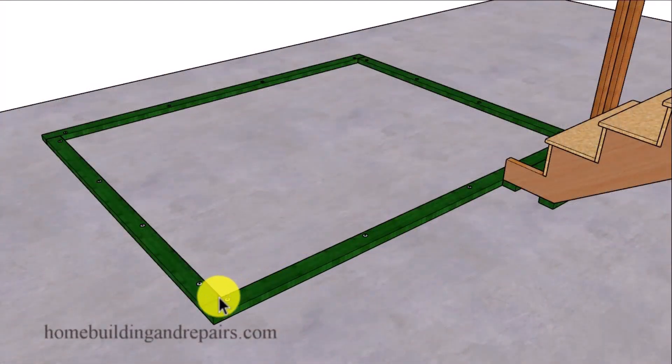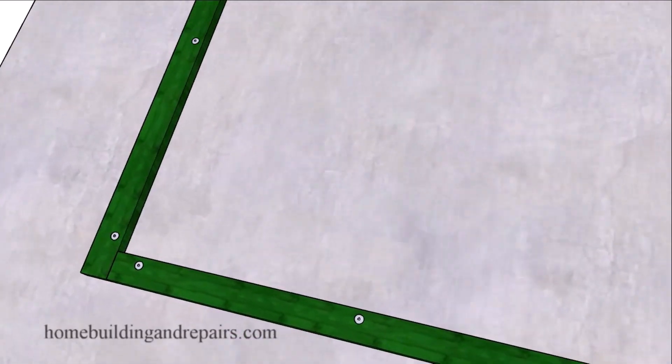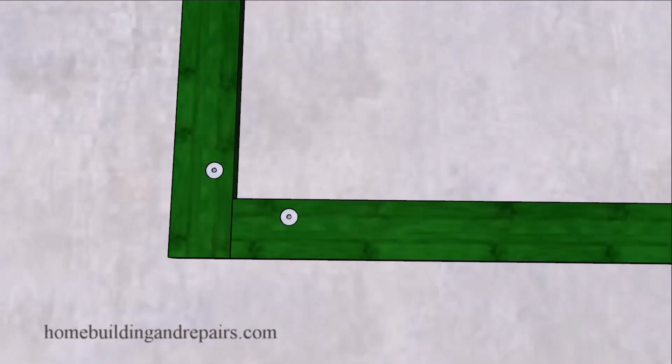Then make sure that you lay out your joist locations before fastening the base plates because you're going to need to make sure your anchors don't land anywhere near the rim joist or the floor joist.